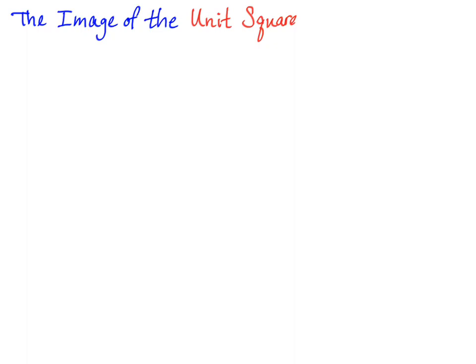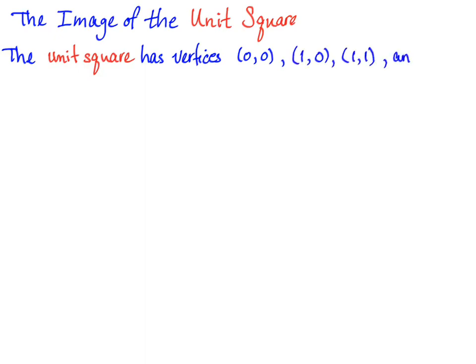Now in this video, we're concerned with the image of a particular region in the plane under different linear transformations. We're going to look at the image of the unit square under different linear transformations. The unit square has vertices at (0,0), (1,0), (1,1), and (0,1), and that region looks like this.